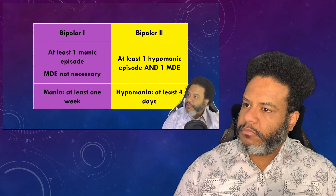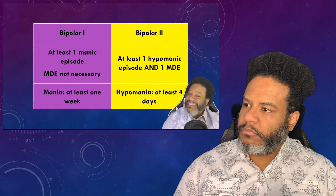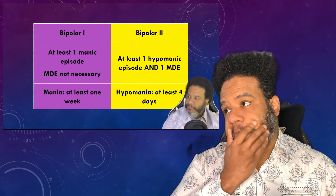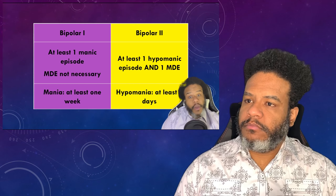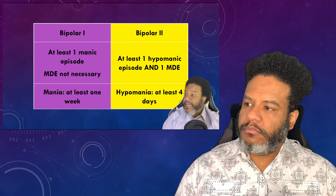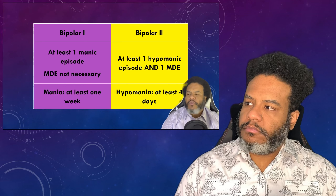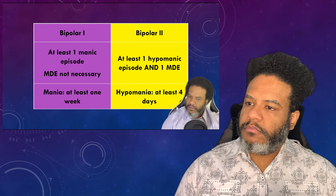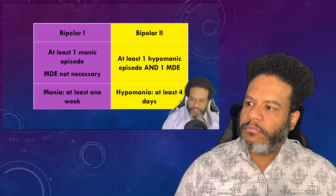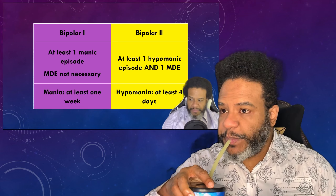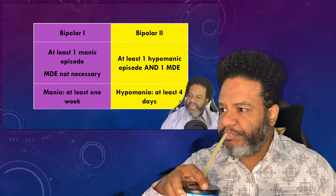Here's a comparison chart: bipolar 1 requires at least one manic episode — an MDE (major depressive episode) is not necessary, though you can have one. Mania must last at least one week. For bipolar 2, you need at least one hypomanic episode and one major depressive episode. The hypomanic period must last for at least four days. You could be depressed and then go to hypomania — that's bipolar 2. Or hypomanic and then depressed — that's also bipolar 2.